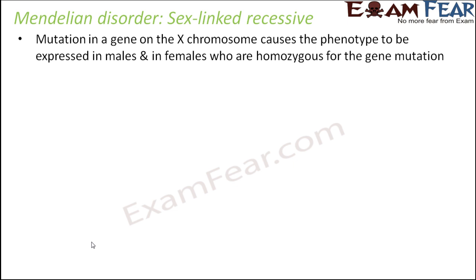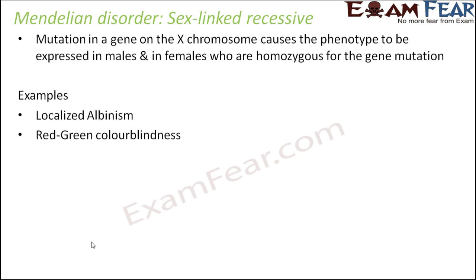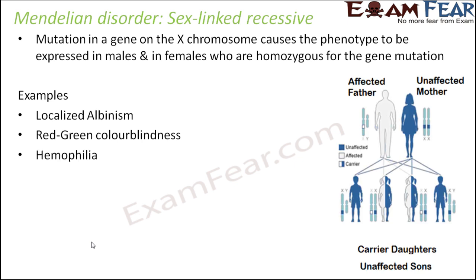Some examples of sex-linked recessive inheritance disorders are localized albinism, red-green colorblindness, and hemophilia. We have discussed most of them in different videos. Let us now look at a generalized pattern of inheritance for sex-linked recessive inheritance.